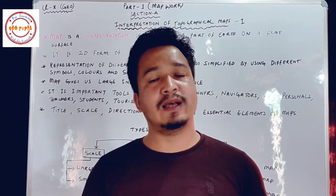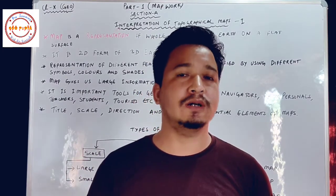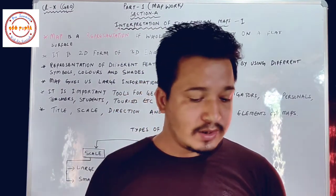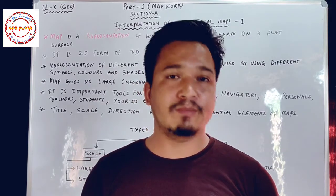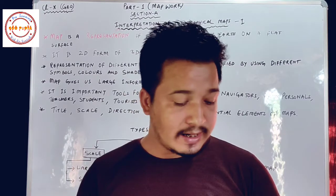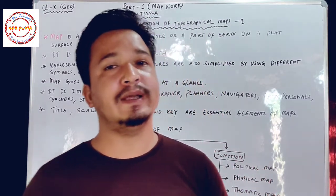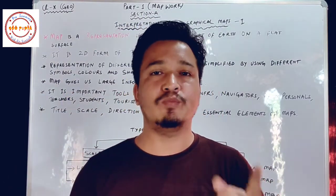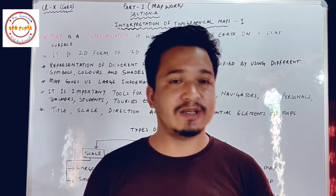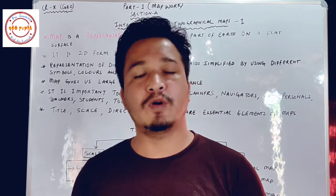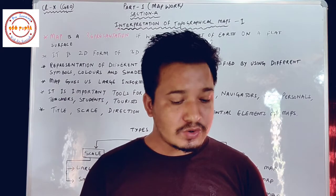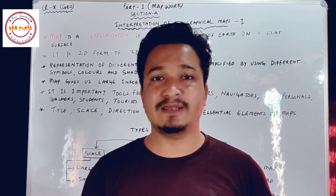Hello students, today we are going to start our geography classes. Before going to the chapter, let us discuss our content. If you see the contents, your book is divided into two parts: Part 1 is Map Work and Part 2 is Geography of India. Part 1 is further subdivided into two sections: Section A, interpretation of topographical maps, and Section B, map of India.